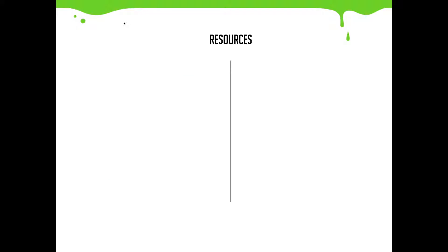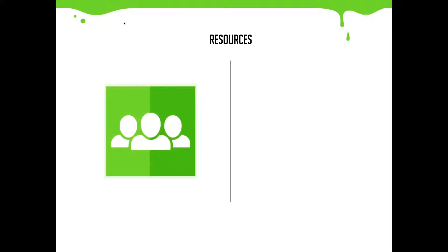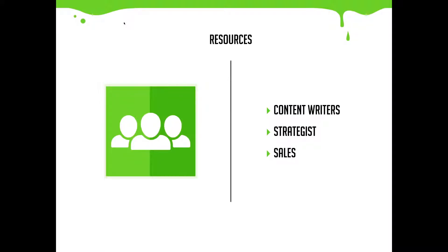To execute our strategies, we need resources — people to get the job done. Content developers and content writers are vital to this process. Someone serving as the strategist to review results and help pivot campaigns as the campaigns teach us what our customers want. And then a sales team that will use all the data we've gathered to help close the deals and turn our leads into happy and fulfilled customers.